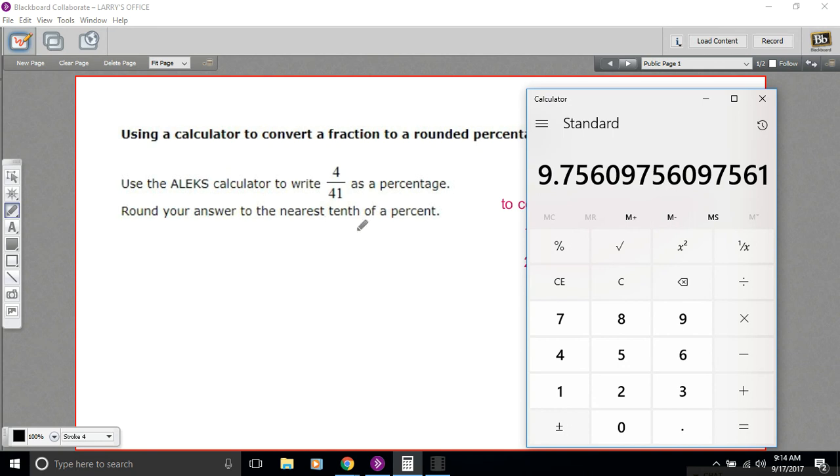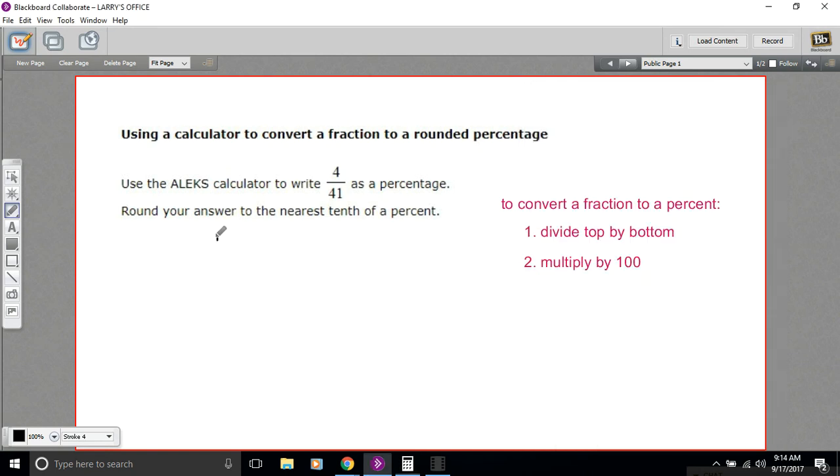This problem calls for us to round to the nearest tenth. So I want to look at the tenths place, which is where the 7 is. And then go one more place to the right, and if it's 5 or above, I round this up to an 8. If it's below 5, I keep the 7. This is 5 or above, so I'm going to round up to 9.8%.